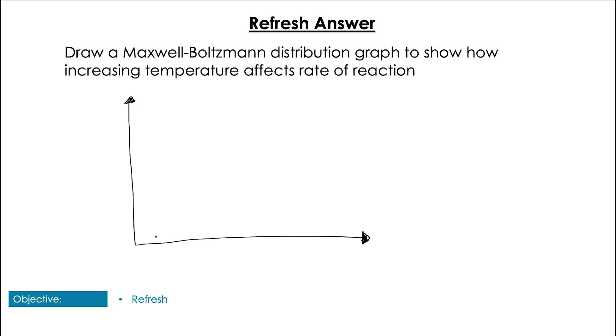If we have a lower temperature, as we increase the temperature, we see the curve shift to the right and slightly down. We see that peak, the average peak, is shifted. When we look at the activation energy, we can see that the area to the right of the activation energy is higher underneath the curve that is of the higher temperature, indicating a higher rate of reaction due to an increased frequency of successful collisions.